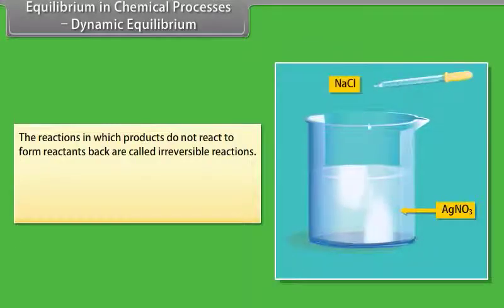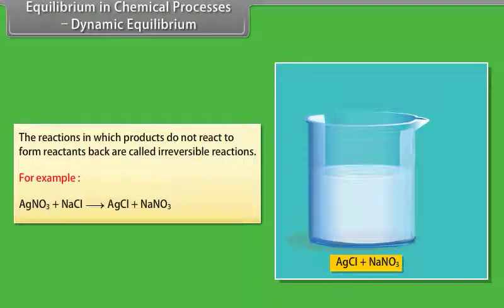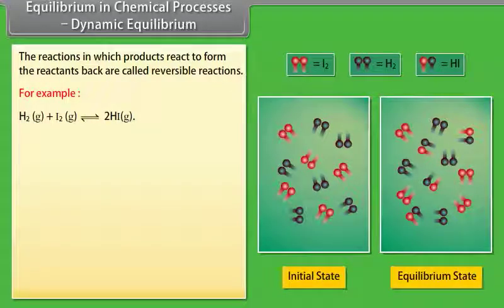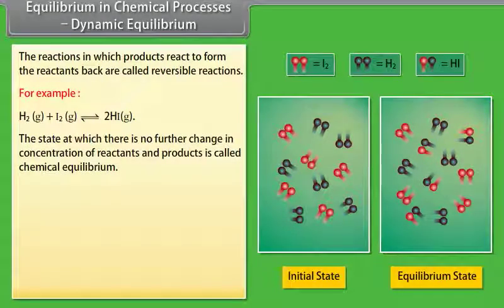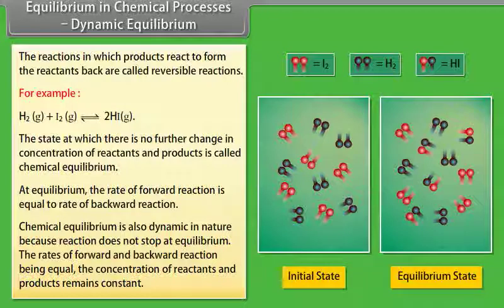Equilibrium in Chemical Processes — Dynamic Equilibrium: Reactions in which products do not react to form reactants back are called irreversible reactions — for example, silver nitrate reacting with sodium chloride to give silver chloride and sodium nitrate. Reactions in which products react to form reactants back are called reversible reactions, represented by two arrows pointing in opposite directions. For example, hydrogen reacts with iodine to give hydrogen iodide. The state at which there is no further change in concentration of reactants and products is called chemical equilibrium, where the rate of forward reaction equals the rate of backward reaction.